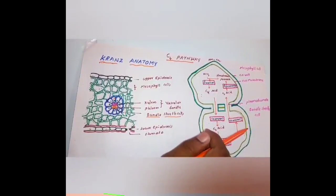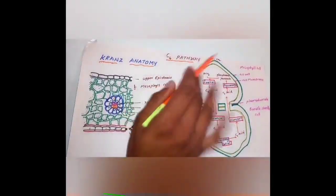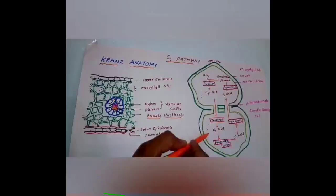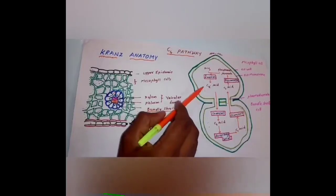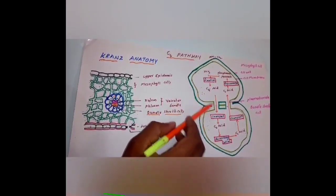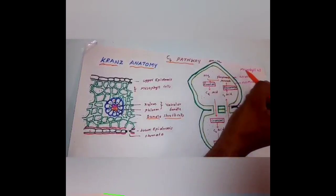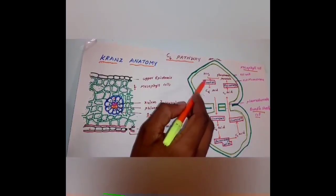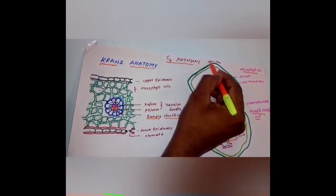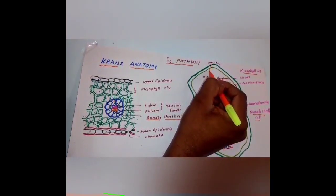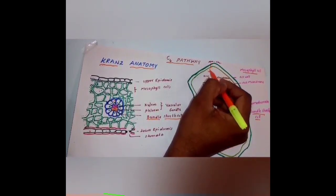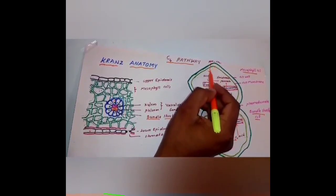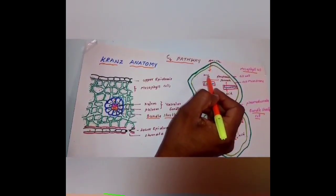The C4 plant dark reaction process is called the C4 pathway. Two types of cells are used: mesophyll cells and bundle sheath cells, interconnected through plasmodesmata. In the mesophyll cells, the atmospheric carbon dioxide is accepted and absorbed through gas exchange, but carbon dioxide is first converted into bicarbonate ions — that is, atmospheric carbon dioxide in gas form is not directly taken by mesophyll cells.